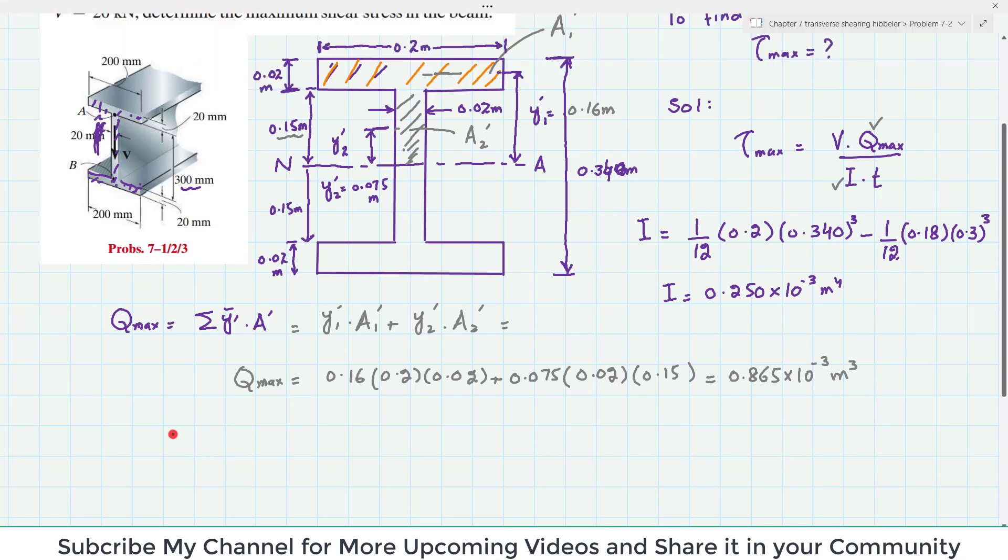So maximum shearing stress tau max is equal to V into Q max divided by I into T. V is given as 20 kilo Newton so 20 into 10 to power 3.